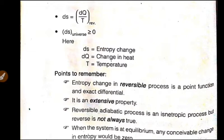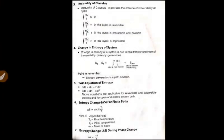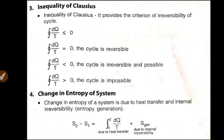Next one is inequality of Clausius. DQ by T is less than or equal to zero, less than zero is irreversible process and possible. Integral of DQ by T equal to zero, cycle is irreversible. DQ by T is greater than zero, impossible cycle, that is impossible.